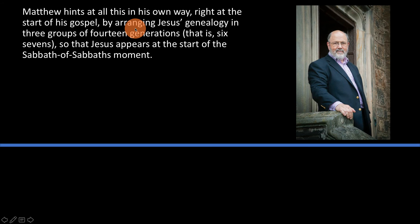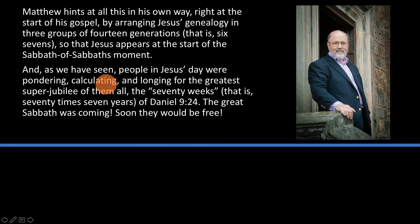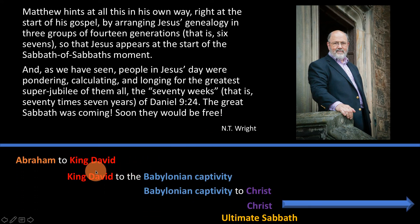This point is made very nicely by N.T. Wright. He writes: 'Matthew hints at all of this in his own way, right at the start of his gospel, by arranging Jesus' genealogy in 3 groups of 14 generations — that is, 6 sevens — so that Jesus appears at the start of the Sabbath of Sabbaths moment. As we have seen, people in Jesus' day were pondering, calculating, and longing for the greatest super-jubilee of them all: the 70 weeks, that is, 70 times 7 years of Daniel 9:24. The great Sabbath was coming. Soon they would be free.' This is a very strong argument: Matthew is laying out his genealogy so that Christ appears as the 7th 7th, representing the ultimate Sabbath.